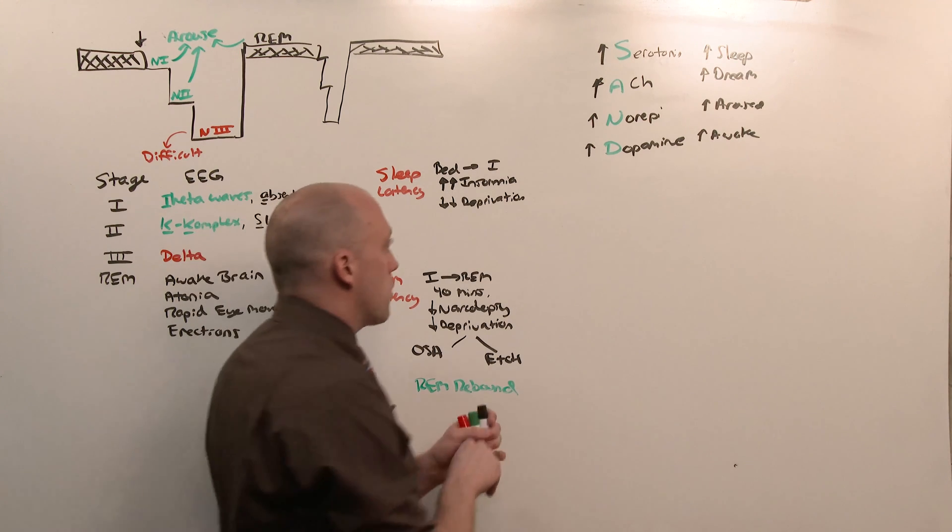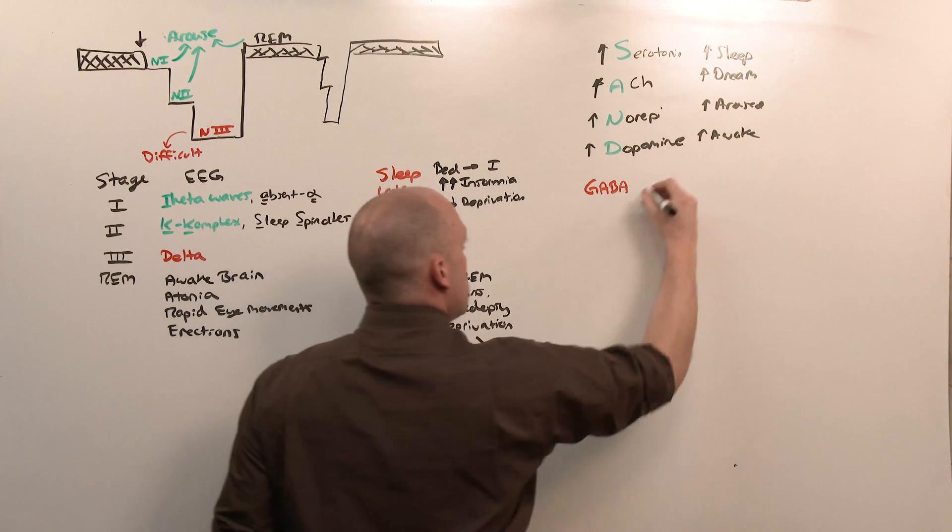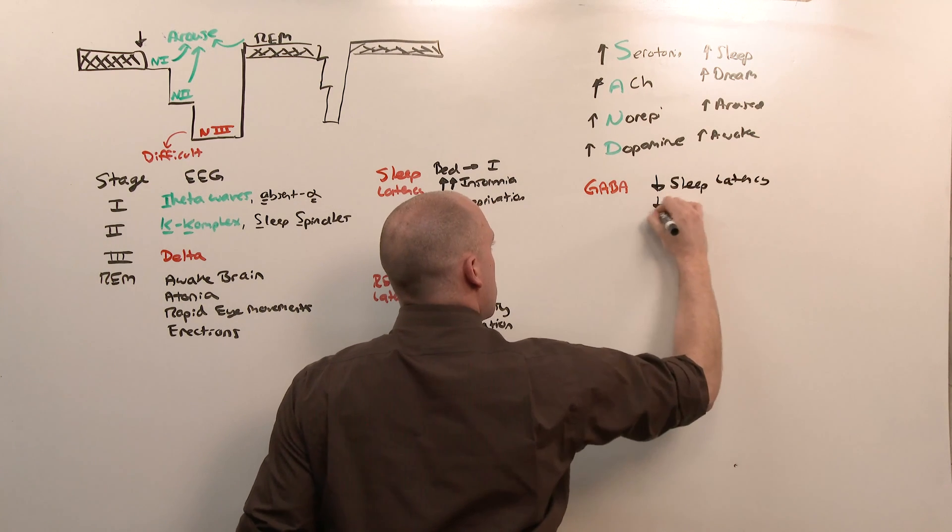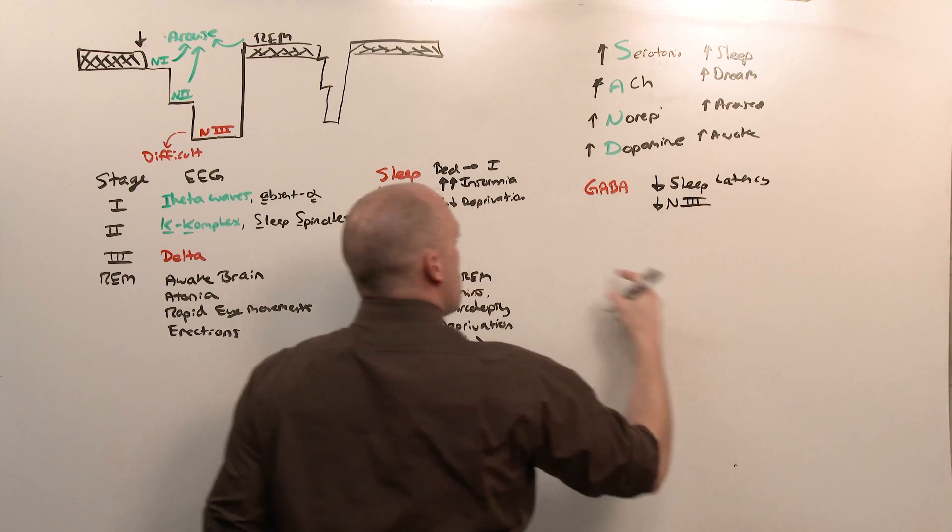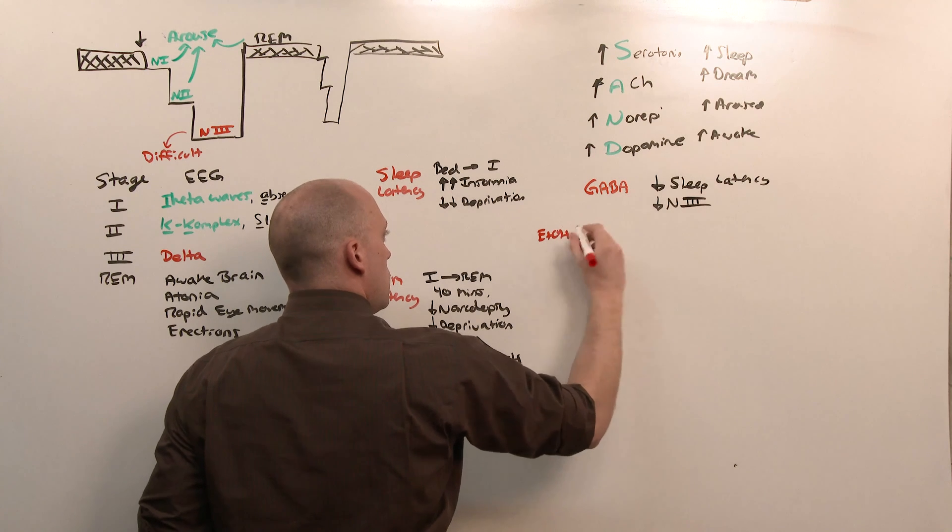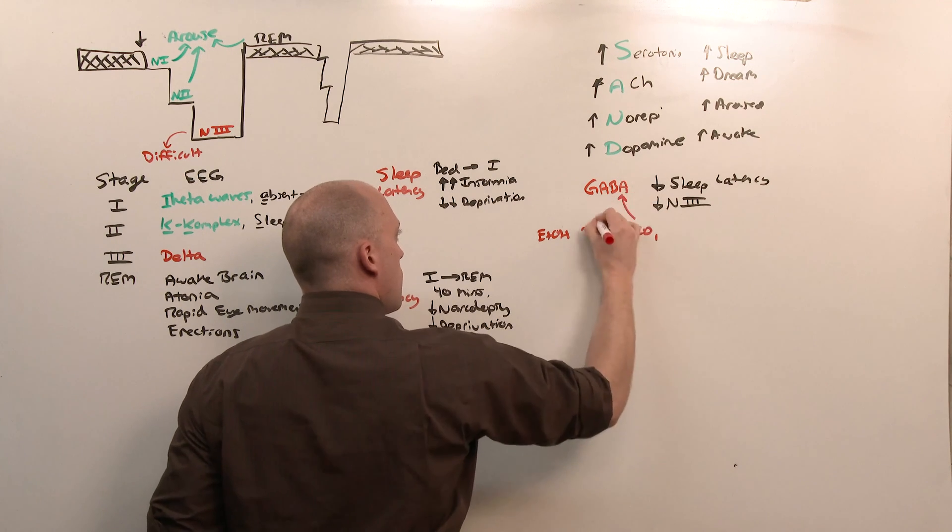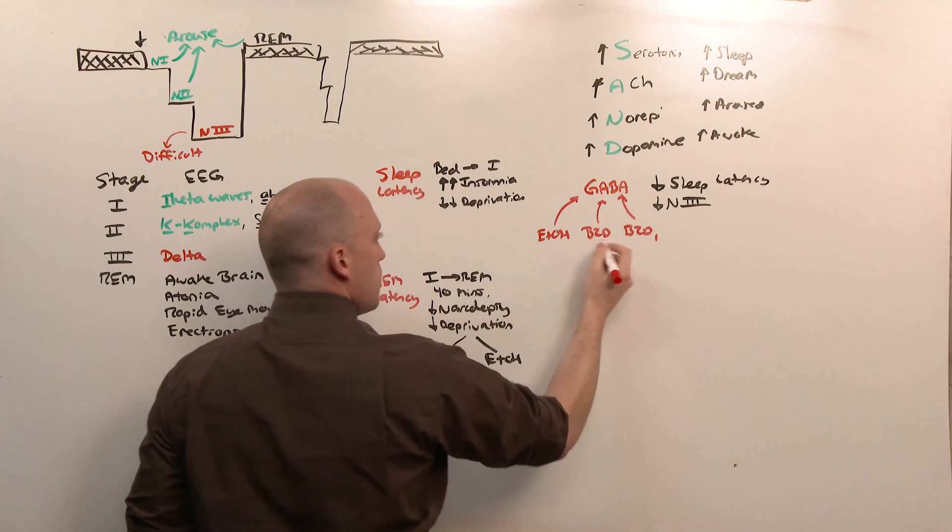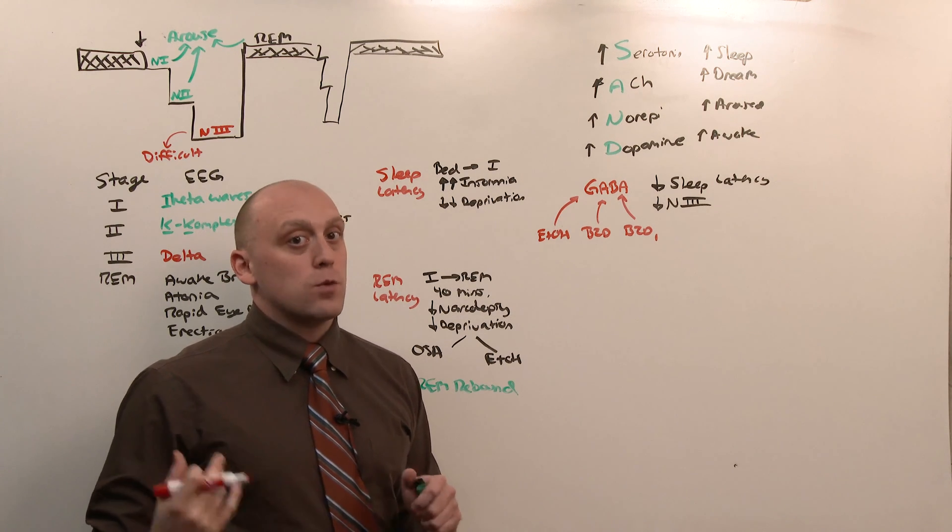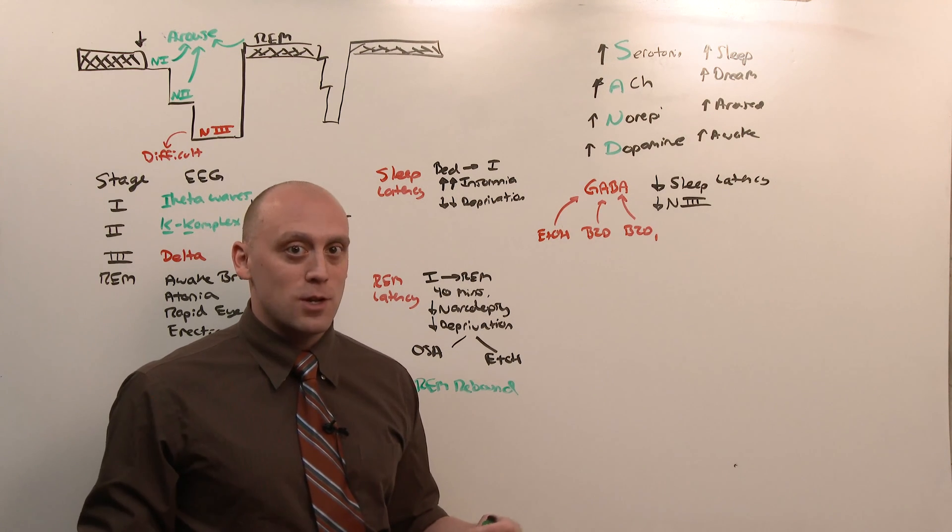But what I do want to talk about is another neurotransmitter called GABA. GABA is going to decrease sleep latency. It's also going to decrease non-REM sleep stage three. The problem with alcohol and benzodiazepines is that they actually cause an upregulation of GABA, such that if you remove them, there's all these excitatory transmitters and all of a sudden you have too much excitation - it's going to lead to seizures.